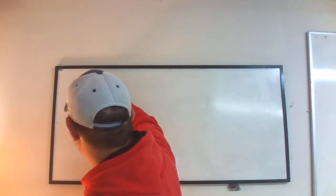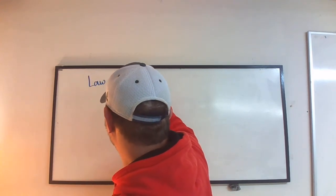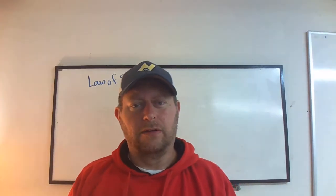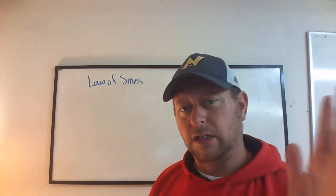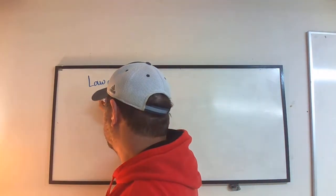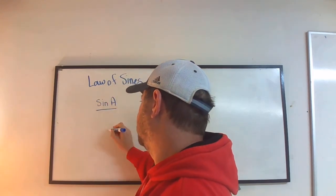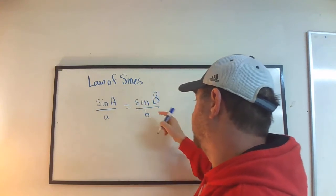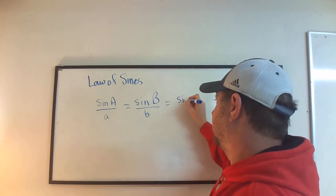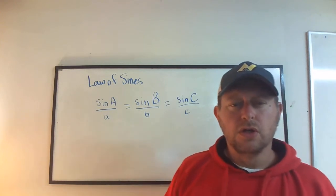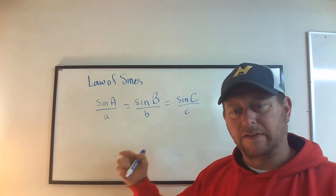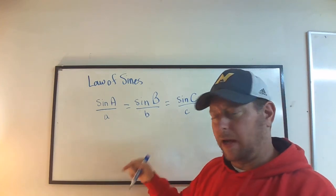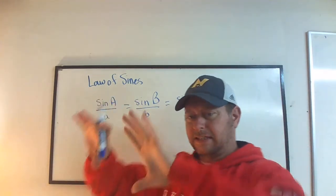We're going to talk about the law of sines first. We're not going to be talking about right triangles — we already did SOH-CAH-TOA and proportions. This is a little different. The formula is: sine of A divided by side a is equal to sine of B divided by side b, which is equal to sine of C divided by side c. We're setting up these proportions.